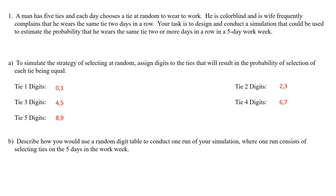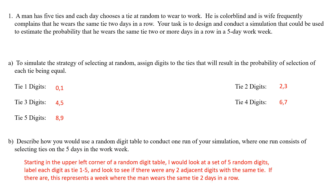For part B, describe how you would use a random digit table to conduct one run, where one run consists of selecting ties for the five days of the workweek. You could start in the upper left corner of the table, look at a set of five random digits, and label each digit as tie 1 through 5. Then check if any two adjacent digits correspond to the same tie — if so, this represents a week where the man wears the same tie two days in a row.